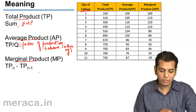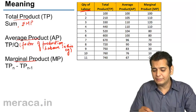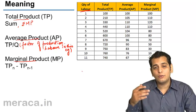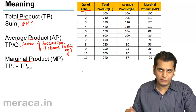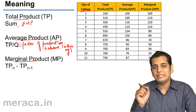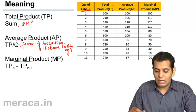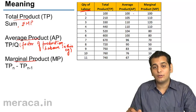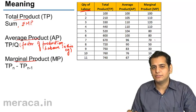Now let's understand what these things mean with the help of a schedule. In this schedule, we have taken the quantity of labor to see how production changes with every increase in the quantity of labor, other factors remaining constant. We observe how Total Product, Average Product, and Marginal Product change at each level.